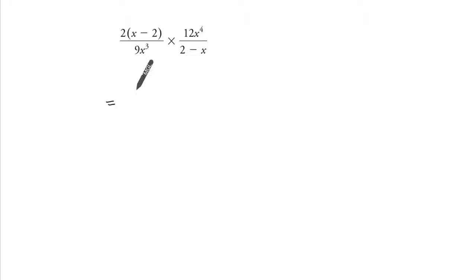Okay, so we have 2 times x minus 2 and 12 times x to the power of 4. Let me put this 12 at the front, so it's 12 times 2 times x to the power of 4.